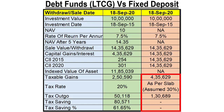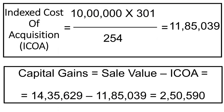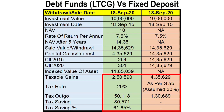In the FD, the tax to be paid is as per your income tax slab, which is assumed at 30%. So the tax payable in the case of FD is Rs. 1,30,689. Now, in the case of LTCG in debt funds, we first calculate the ICOA. The CII in 2015 is 254 and in 2020 is 301. Accordingly, the ICOA is 10,00,000 multiplied by 301 divided by 254, which is equal to 11,85,039. So the adjusted capital gains is 14,35,629 minus 11,85,039, which is equal to Rs. 2,50,590. And the tax payable at 20% on this is Rs. 50,118. This is a reduction of Rs. 80,571 or 62% in terms of percentage.